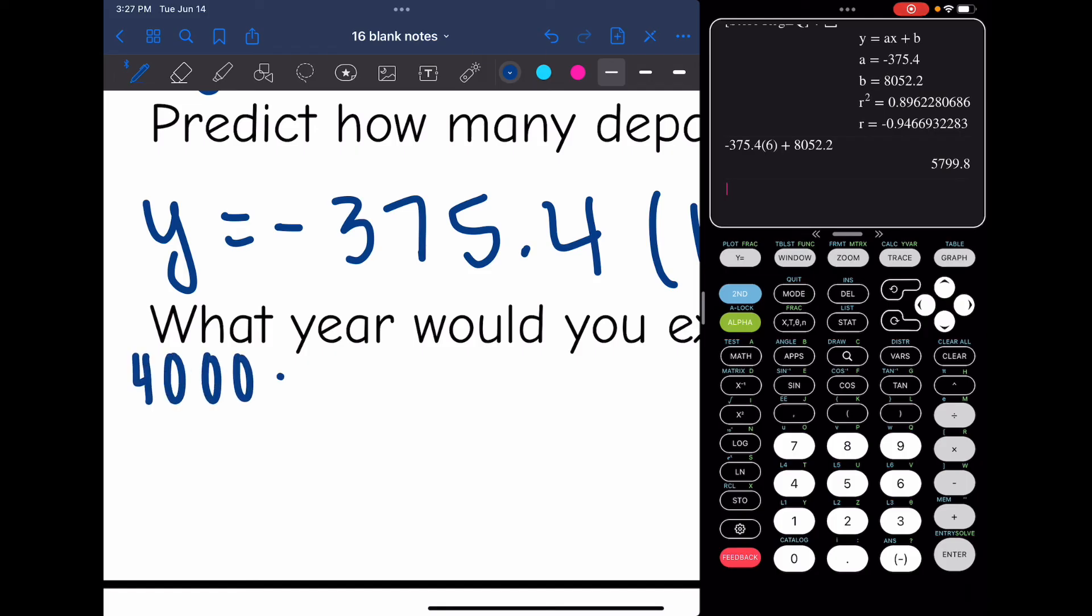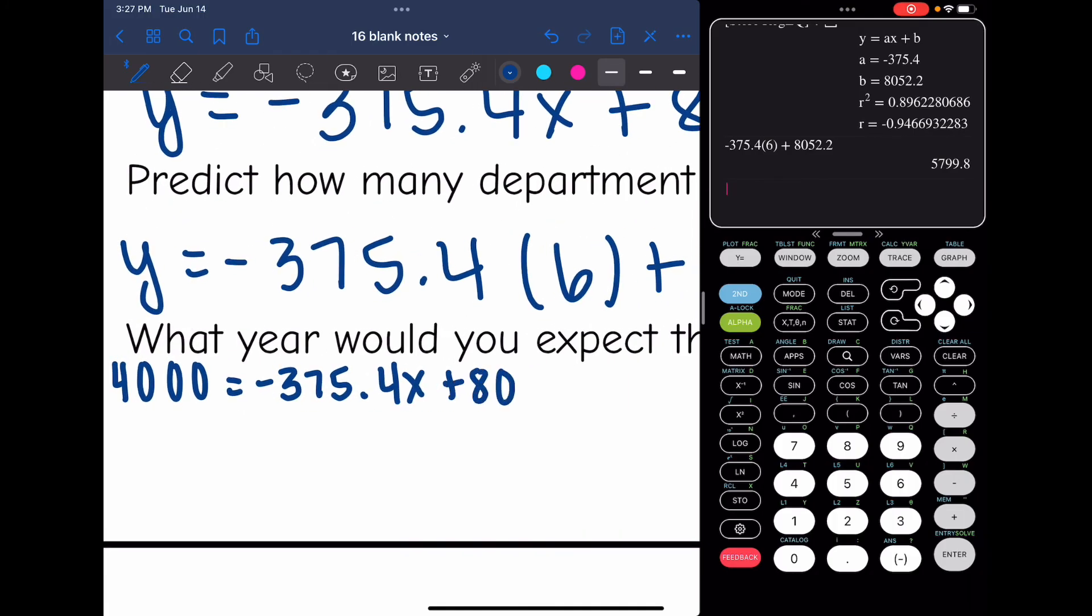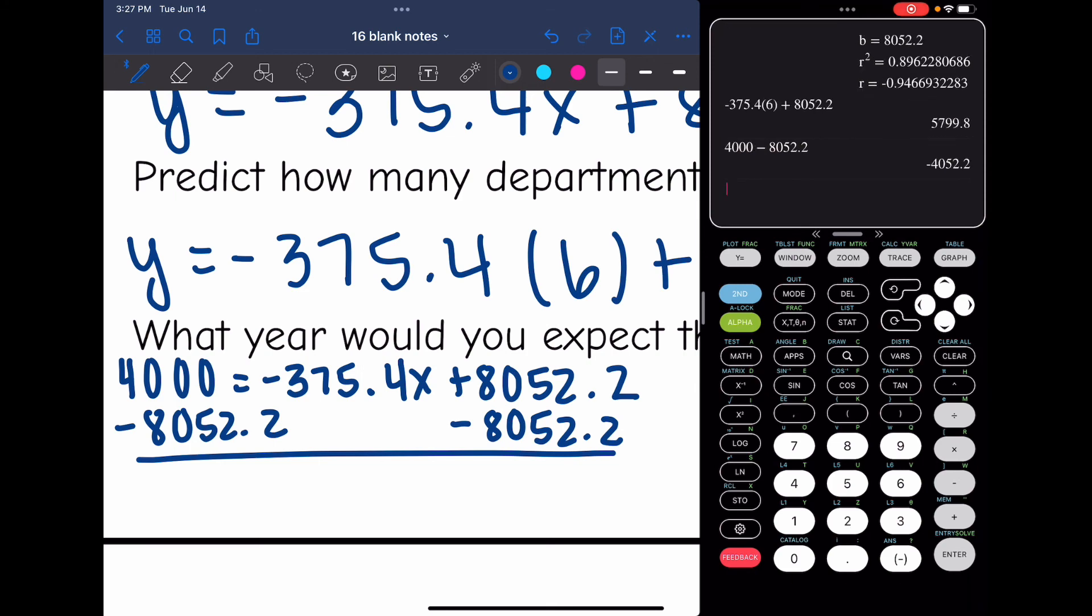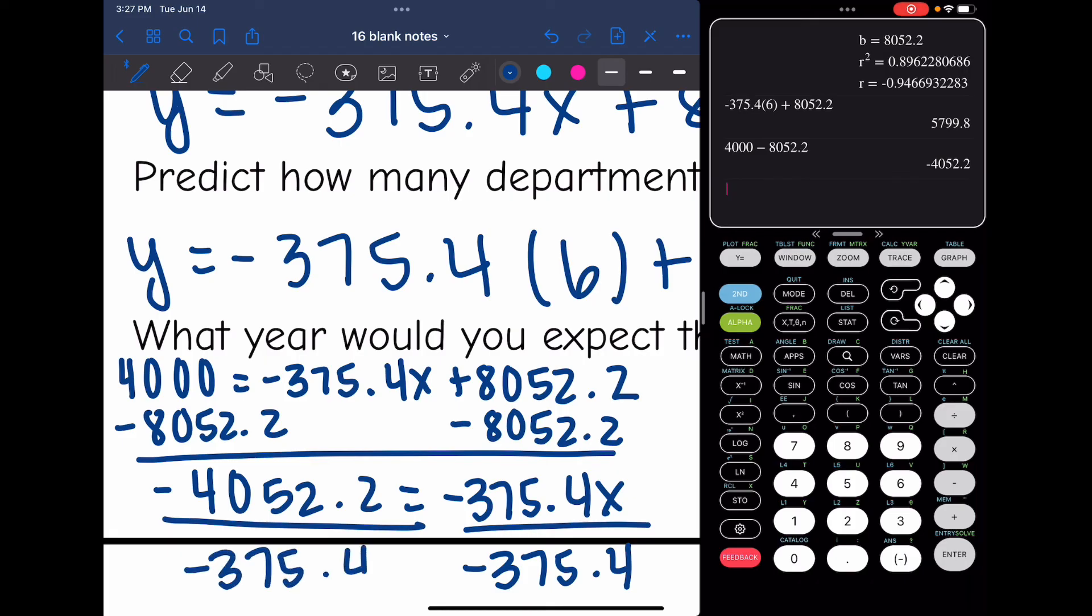So first thing I need to do is subtract 8,052.2. And 4,000 minus 8,052.2 is negative 4,052.2. And then we would divide by negative 375.4. So take that answer and divide it by negative 375.4.